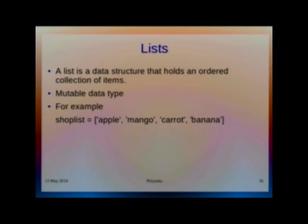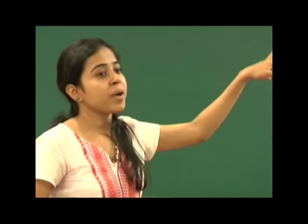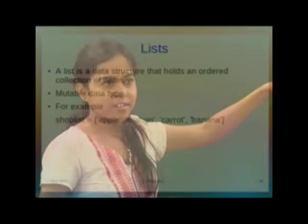Now we have come to lists. List is basically like data structures. You have studied linked lists, stacks, queues and all. Some combined features are here in list. A list is a data structure that holds an ordered collection of items. In lists, you can store sequences of items, for example, your shopping list. It is a mutable data type. I will explain it in the next slide.